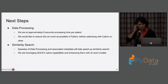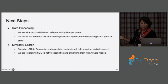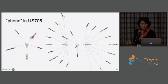The next steps are to try to reduce this approximately eight seconds processing time — it's still non-real-time. We want to see how far we can push it in Python before we have to resort to Cython, NumPy, or another option. On similarity search, some of what we did for data processing will help, and we're also going to look at Solr to see how we can incorporate the AI word models directly in Solr without losing performance.